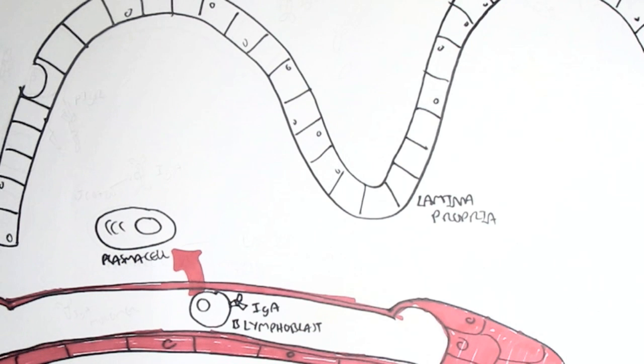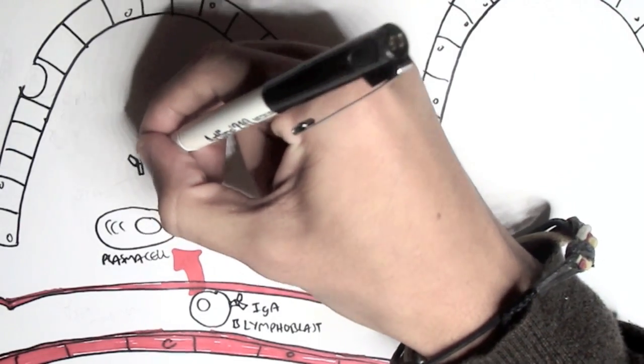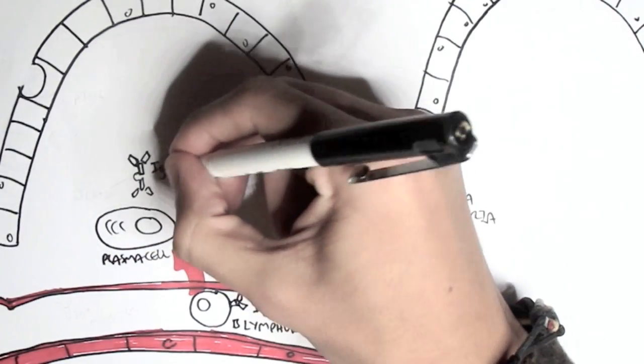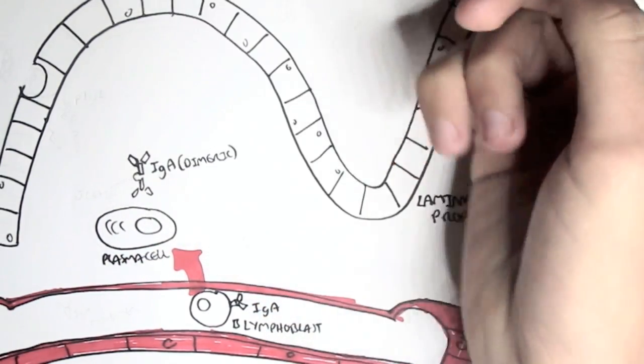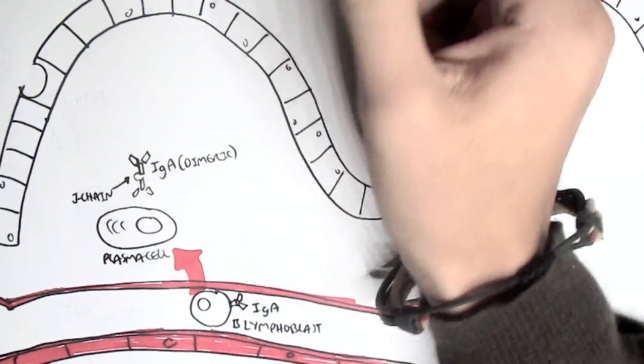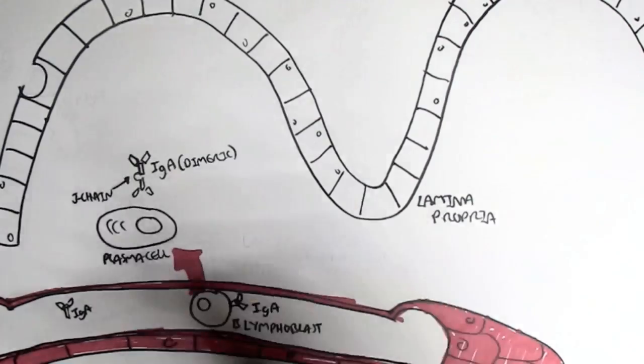When the plasma cell produces IgA, it produces it in a dimeric form within the mucosal system. The dimeric form is when the two IgA monomers are connected to each other by a J chain. However, if the IgA is secreted in the bloodstream, the IgA is usually monomeric, just one of them secreted like so.